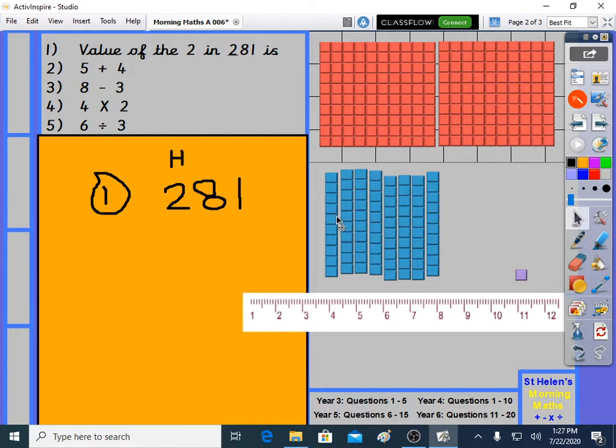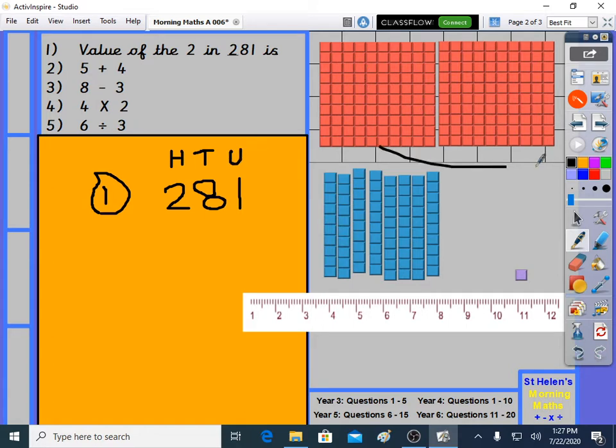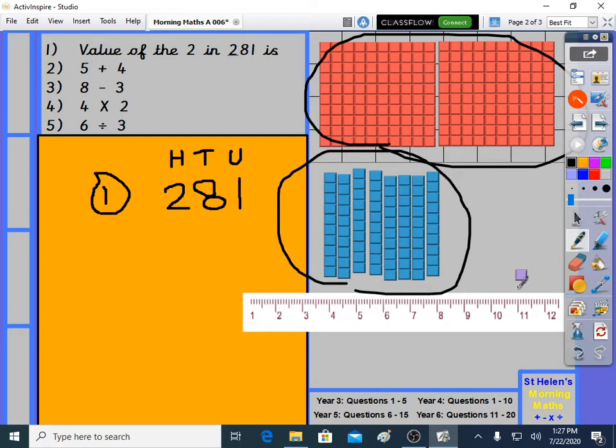Then we have 8 of these 10s, you recognize these? These are 10, and there's 8 of these. 1, 2, 3, 4, 5, 6, 7, 8. So we have 8 10s. And then this is units, just the little 1. 1, 1 unit. So we have 200, the red ones, 80, 8 10s, and 1 unit. And that's 281.